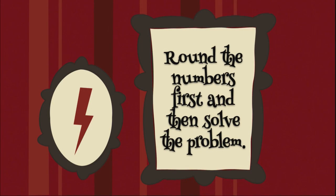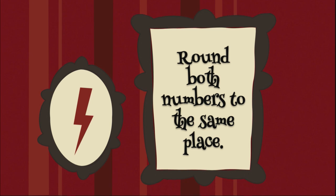So the first thing I want you to remember when estimating sums and differences is to round the numbers first and then solve the problem. Round first. And secondly, round both numbers to the same place. When we are estimating sums and differences, we round both numbers to the same place.